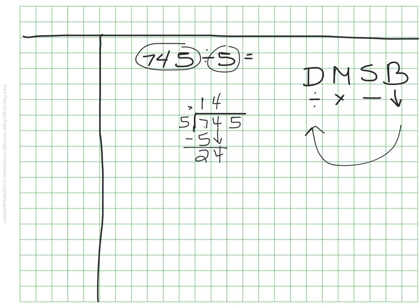That was my D. My M is multiply. 5 times 4 is 20. S tells me to subtract. And B tells me to bring down.